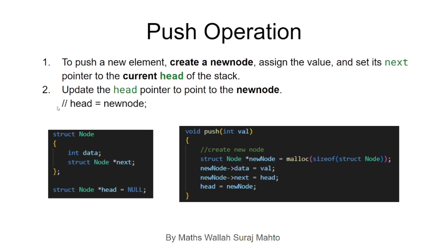The push operation: when adding a new element, we create a new node. We allocate memory using the malloc function, which allocates space for a struct node. The push function takes a parameter int val, and we set the new node's data to that parameter value.